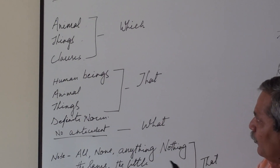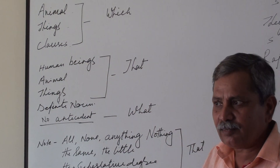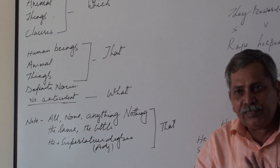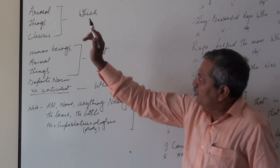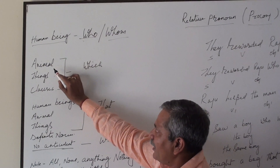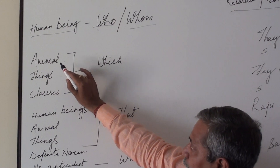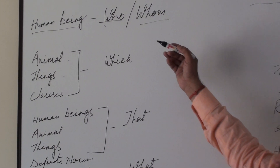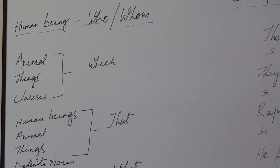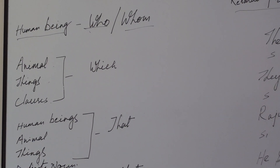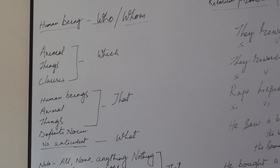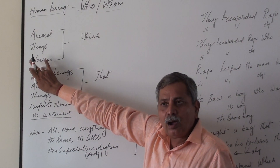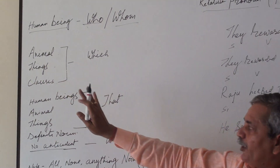You might be thinking: what do you mean by clause? Actually, when the antecedent is a word, there is no problem — see whether it is a human being, an animal, or a thing, and you can easily judge whether to use who or which. But if the antecedent is the whole clause, only which can be used, whether it refers to a human being, animal, or thing — it doesn't matter.